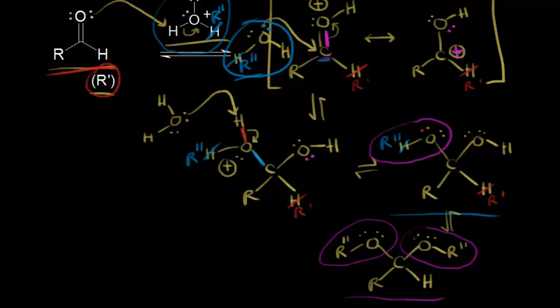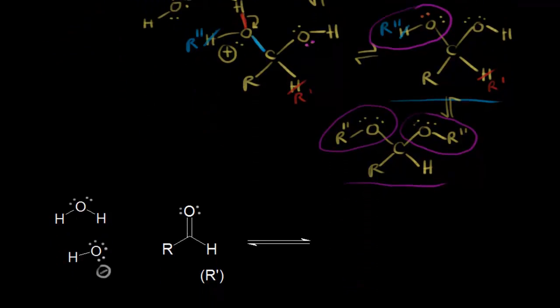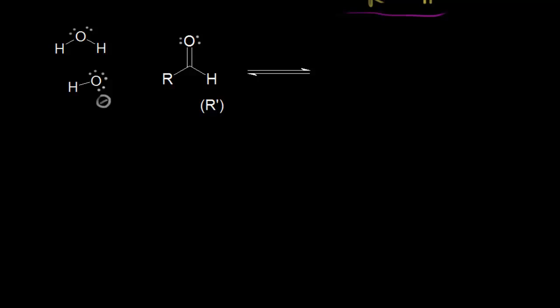We can also form hydrates and hemiacetals using base to catalyze the reaction. Let's look at the mechanism for that, starting with hydration again. In the uncatalyzed version, we used water as our nucleophile — our carbonyl carbon is partially positive and our oxygen is partially negative. In a base-catalyzed version, the base can take off a proton from water and make it into a stronger nucleophile, forming the hydroxide anion, which is a better nucleophile than water.